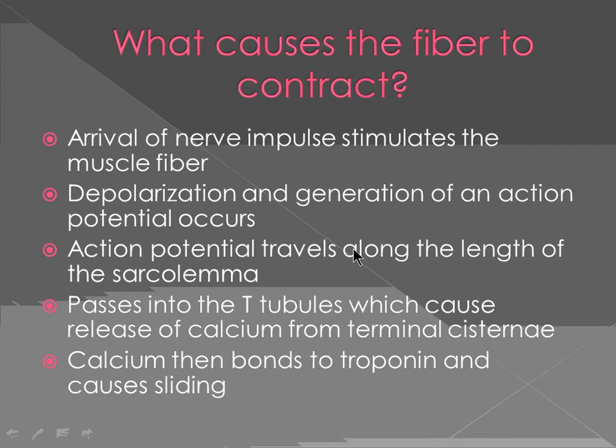So far we've looked at how myosin heads attached to the actin filament and pulled it to the center. But what actually causes that sliding to occur? If you remember, we said skeletal muscle was innervated through the somatic nervous system, and cardiac and smooth muscle through the autonomic nervous system. There must be a reason I mentioned nerve supply — it is the arrival of a nerve impulse that actually brings about this whole action.